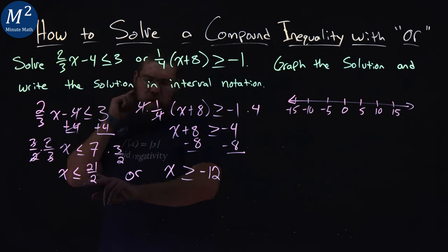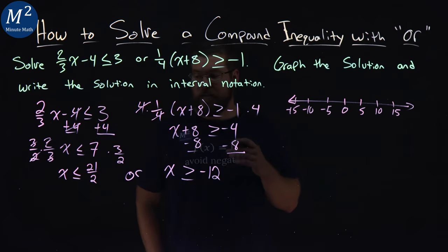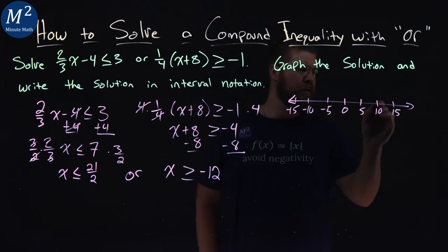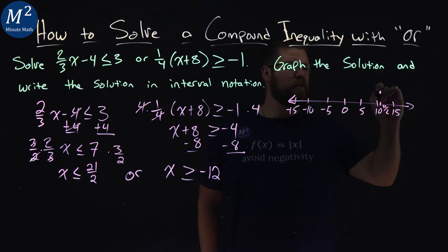Our first one here, let's do 21 over 2. That's 10.5. So, x is less than or equal to 10.5. I'm going to put that here. That's the 21 over 2. And we have a closed circle there.